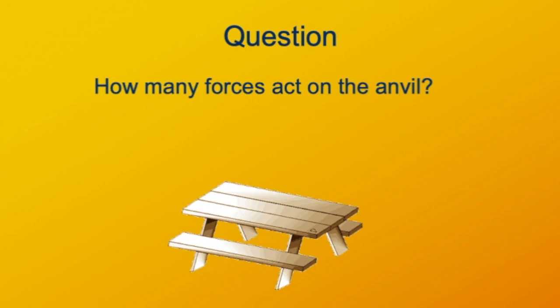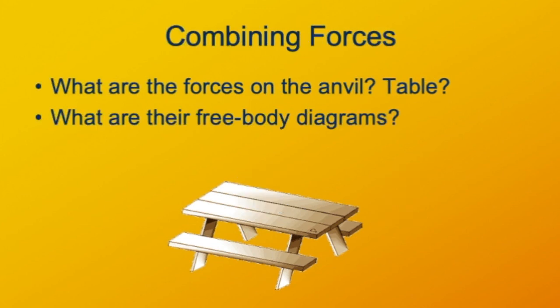Let's start with a very simple example. I have an anvil resting on a table. It's resting, so there is zero net force on the anvil. How many individual forces are acting on the anvil? Likewise, with the same anvil on the table, how many forces are acting on the table? Now that we've counted them, we can figure out exactly what the forces are. So what are the forces acting on the anvil? What are the individual forces acting on the table?